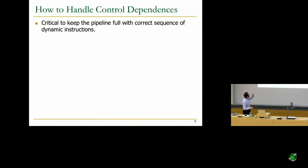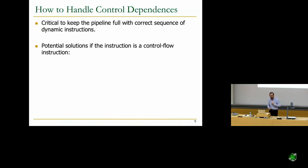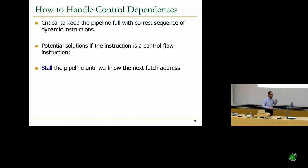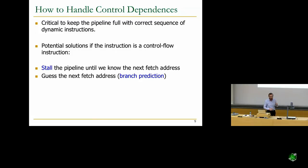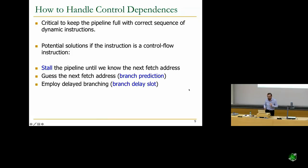It's critical to keep the pipeline full with the correct sequence of dynamic instructions. There are potential solutions to this. You can stall the pipeline until you know the next fetch address — this is a bad idea because you know the fetch address late. Or you can guess the next fetch address — this is branch prediction.